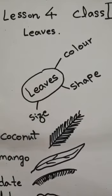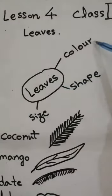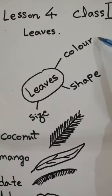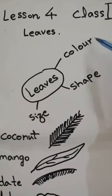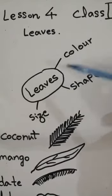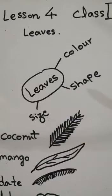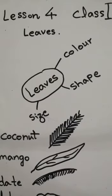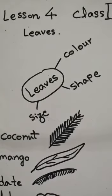لیکن اگر ہم leaves کو دیکھیں تو ان کی different shapes نظر آئیں گی۔ اگر آپ کسی leaf کو دیکھتے ہیں تو اس میں آپ تین چیزیں observe کرتے ہیں: اس کا color — green ہے یا کوئی اور color ہے۔ Different ایسے plants بھی ہوتے ہیں — آپ Google پر جائیں اور search کریں 'pictures of plants having different colors of leaves'۔ پھر leaves کا color دیکھتے ہیں، پھر shape دیکھتے ہیں، اور پھر size — some leaves have small size and some have a large or big size. So when you observe leaves, you observe three things: color, shape, and size.